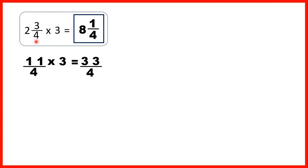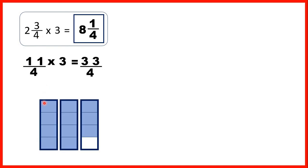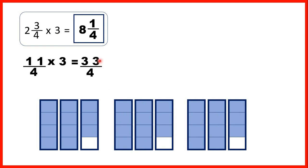Let's take another look at the first question. We had 2 and 3 quarters, which is the same as 11 quarters because each piece is a quarter and we have 11 of them. Multiplying that by 3 means we can show 11 quarters 3 times, giving us 33 quarters altogether. With some regrouping we can see that 33 quarters is the same as 8 wholes and 1 quarter — so that's our answer.